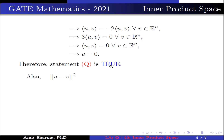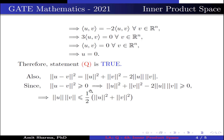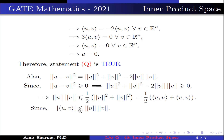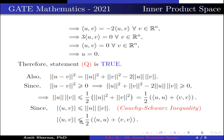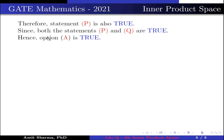Therefore statement Q is true. Also, ‖u - v‖² = ‖u‖² + ‖v‖² - 2‖u‖·‖v‖. Since ‖u - v‖² ≥ 0, this implies ‖u‖² + ‖v‖² - 2‖u‖·‖v‖ ≥ 0, which simplifies to ‖u‖·‖v‖ ≤ 1/2·(‖u‖² + ‖v‖²) = 1/2·(⟨u,u⟩ + ⟨v,v⟩). Since |⟨u,v⟩| ≤ ‖u‖·‖v‖ by the Cauchy-Schwarz inequality, we get |⟨u,v⟩| ≤ 1/2·(⟨u,u⟩ + ⟨v,v⟩). Therefore statement P is also true. Since both statements P and Q are true, option A is correct.